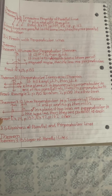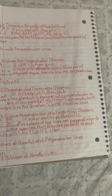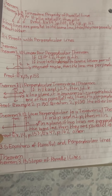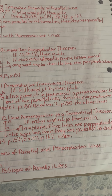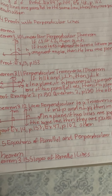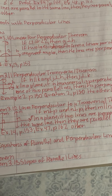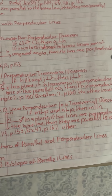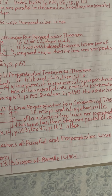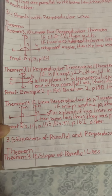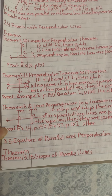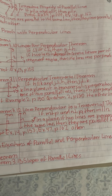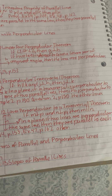Theorem 3.11, Perpendicular Transversal Theorem: In a plane, if a transversal is perpendicular to one of two parallel lines, then it is perpendicular to the other line as well. Proof. Example: 2P150. Question 2, P150.